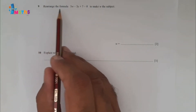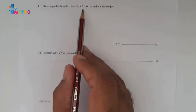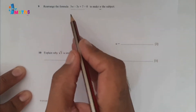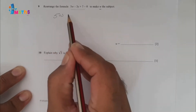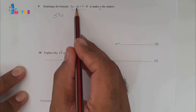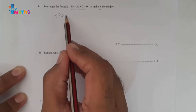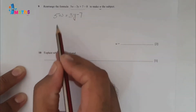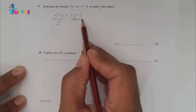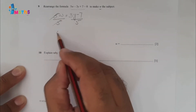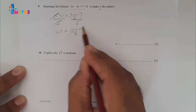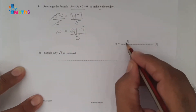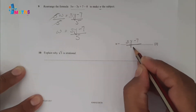Question number nine: rearrange the formula 5w minus 3y plus 7 equals zero to make w the subject. We shift everything else to the other side: 5w equals 3y minus 7. Now divide both sides by 5 to get w equals (3y minus 7) over 5. This is our answer: w = (3y - 7) / 5.